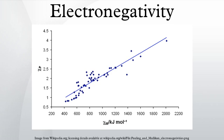Electropositivity is a measure of an element's ability to donate electrons and therefore form positive ions; thus it is opposed to electronegativity. Mainly this is an attribute of metals, meaning that in general the greater the metallic character of an element, the greater the electropositivity. Therefore the alkali metals are the most electropositive of all, because they have a single electron in their outer shell which, being relatively far from the nucleus, is easily lost — in other words, these metals have low ionization energies. While electronegativity increases along periods and decreases down groups, electropositivity decreases along periods and increases down groups. Electropositive shark repellent utilizes electropositive metals as shark repellents, since they generate measurable voltages in a seawater electrolyte relative to a shark.